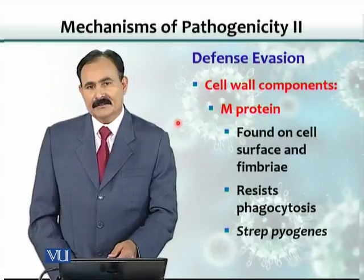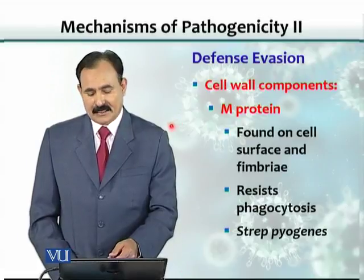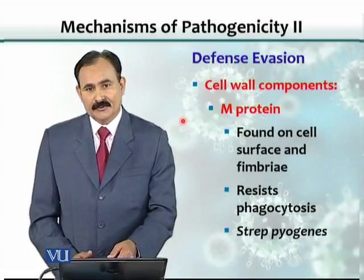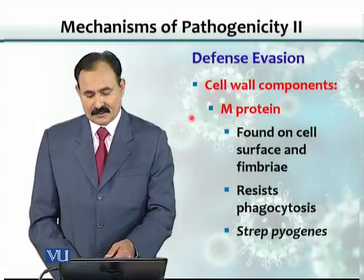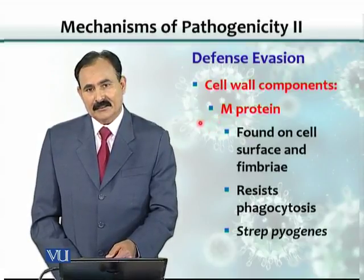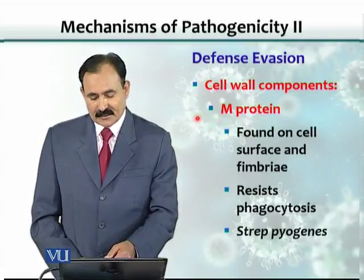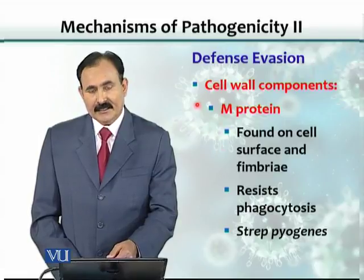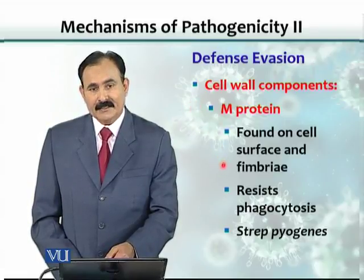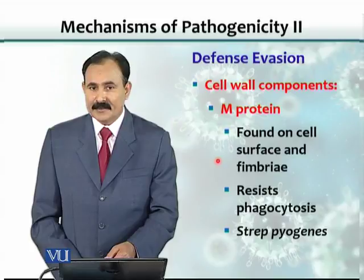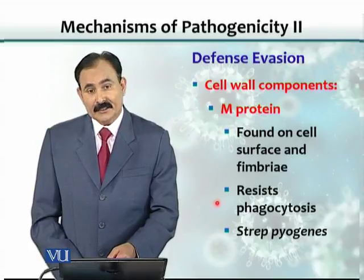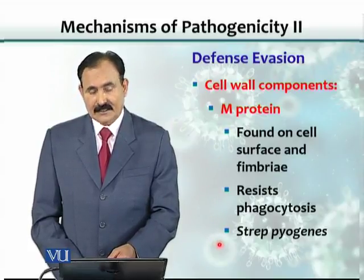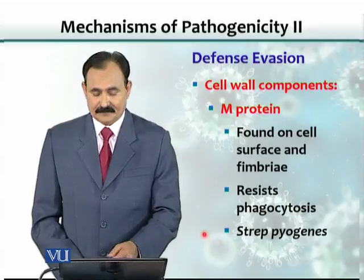Another mechanism that organisms use for evading the immune system is M-protein. M-protein is a cell wall component, and sometimes also present on the fimbriae. It also resists phagocytosis. An example is Streptococcus pyogenes.